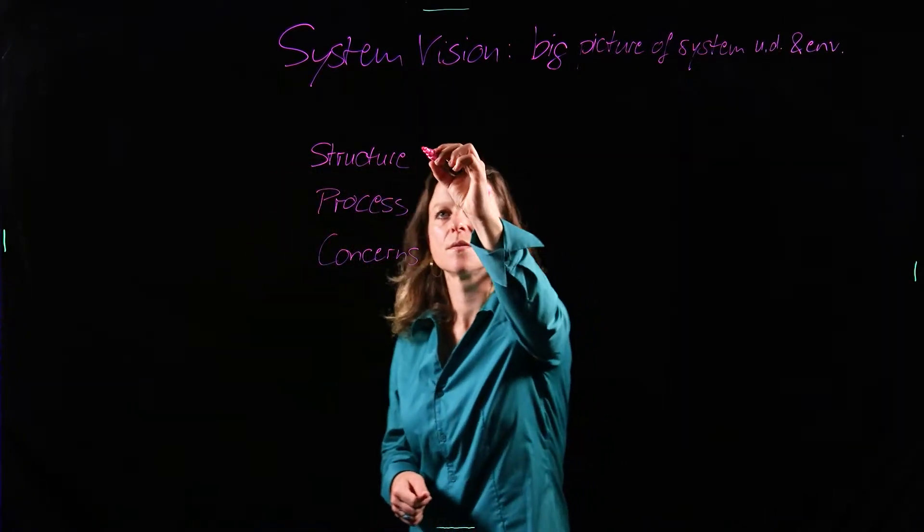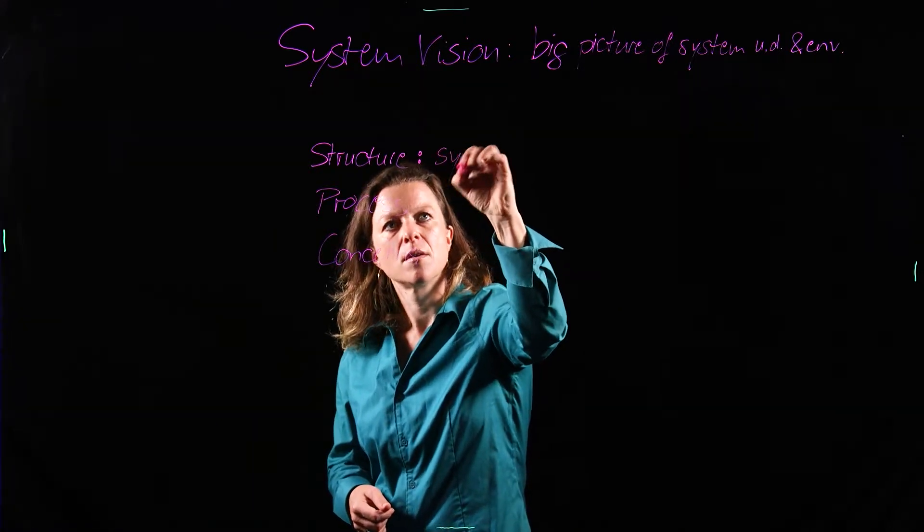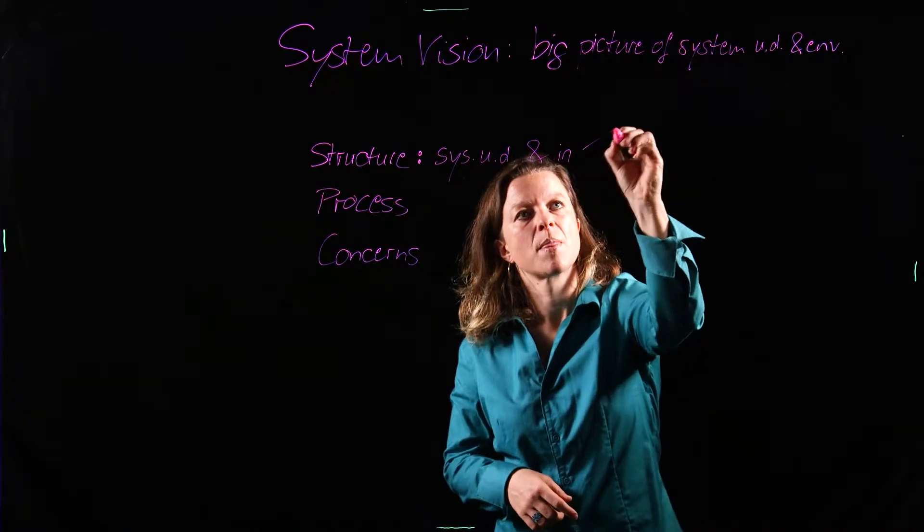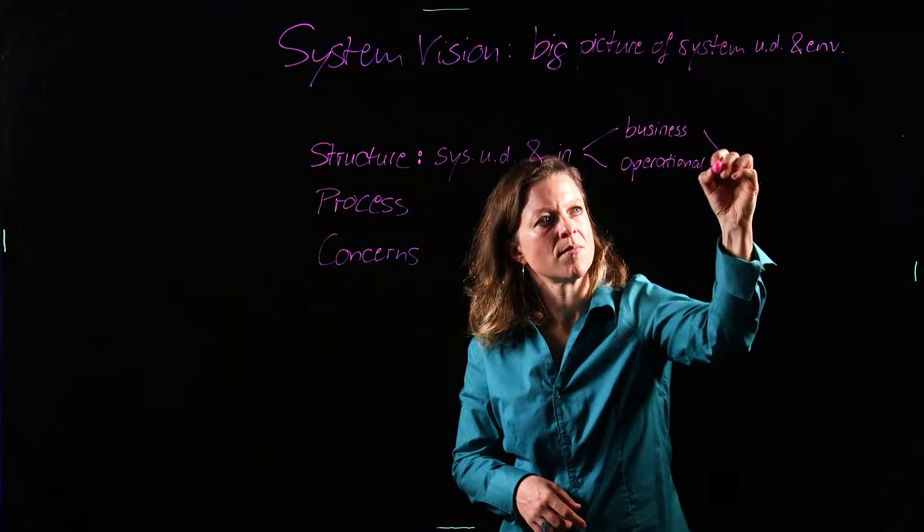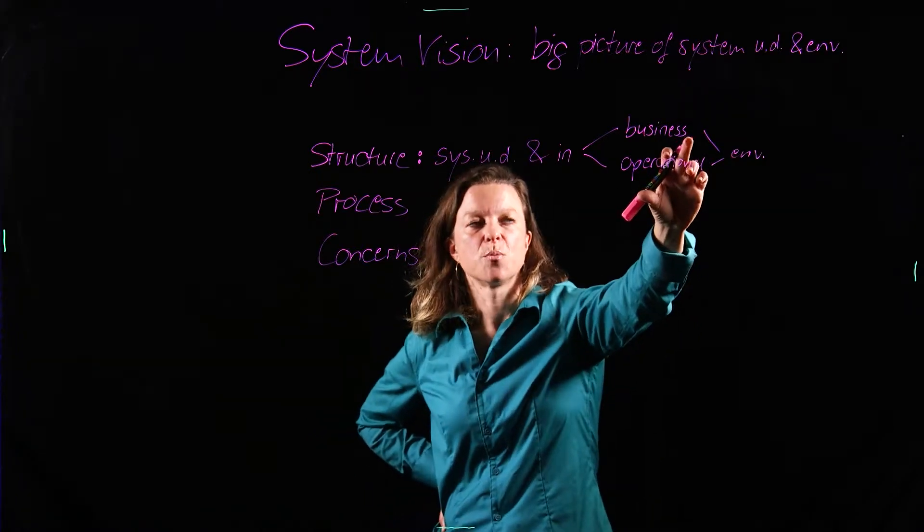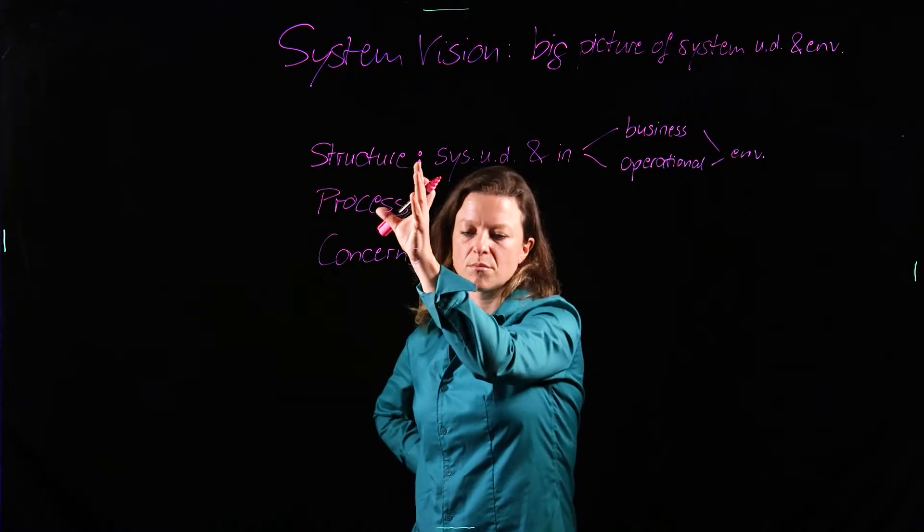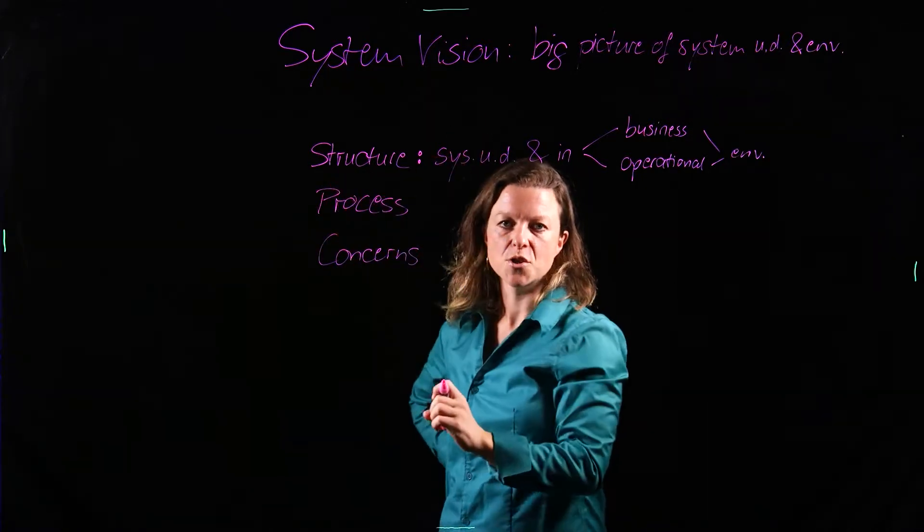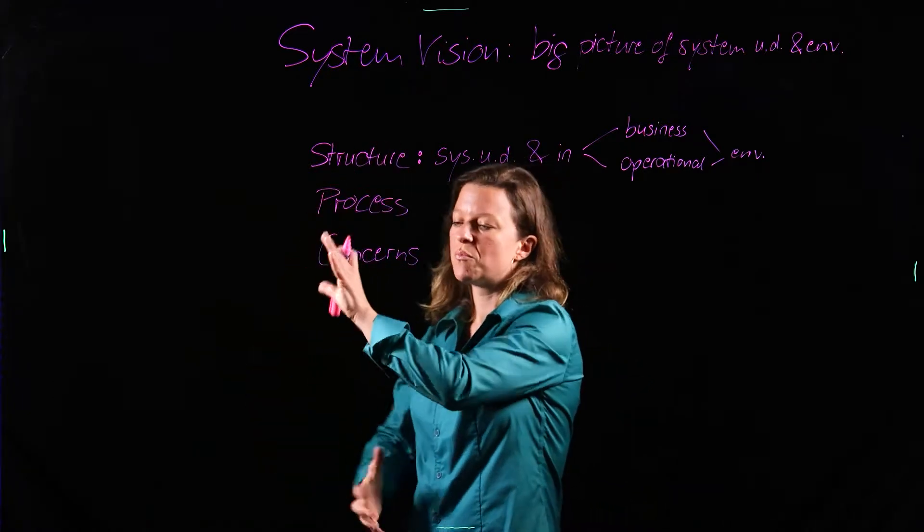So the structure means the structure of your system under development and the systems in the domain. So system under development and in business environment and operational environment. Now those two things differ. Your business environment says here's the billing unit that will take care of billing the customers. Here is Customer Relationship Management and here is the hotline that you can call and over here is the manager who oversees if we manage to get the return on investment. That is your business context for your system.